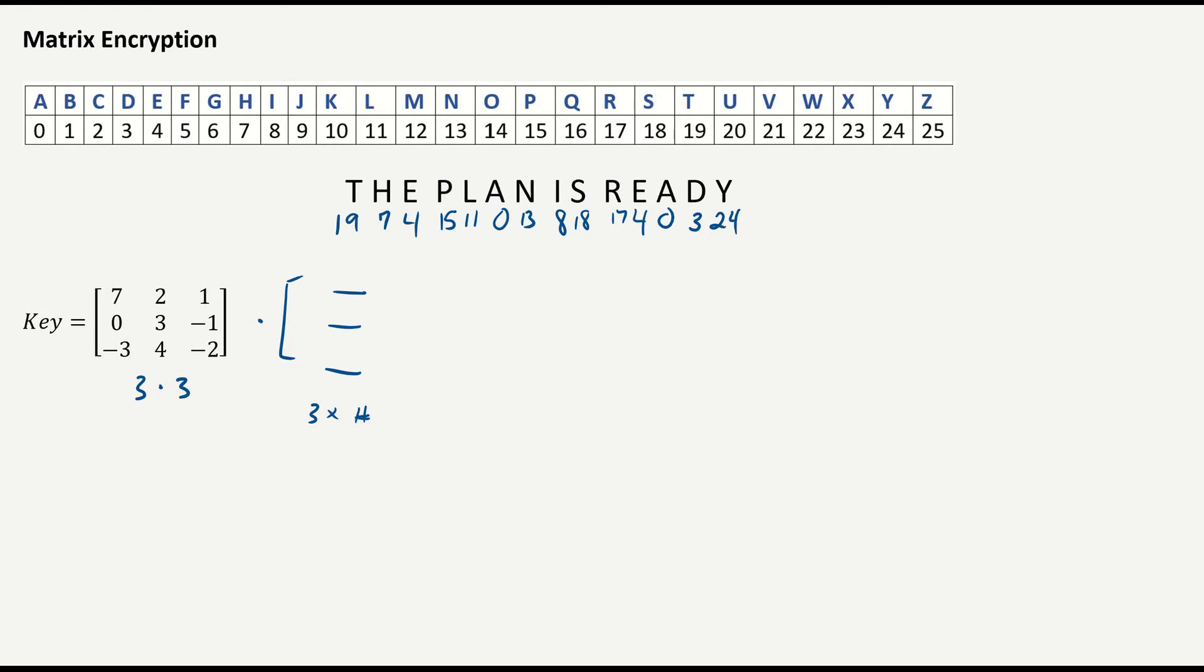So I'm going to this time fill my numbers going column by column. So I'm going to go 19, 7, 4, and then 15, 11, 0, 13, 8. And I'm going to keep going until I use up my numbers, and we'll see what we have.